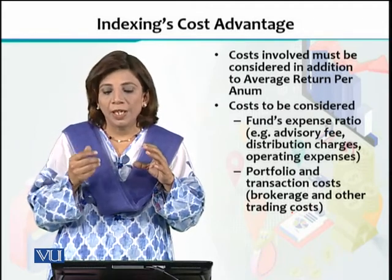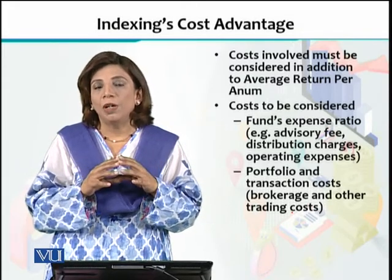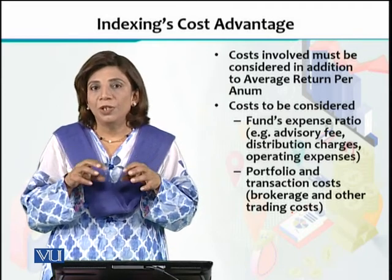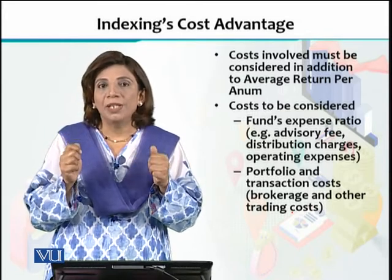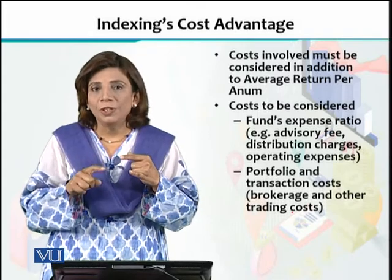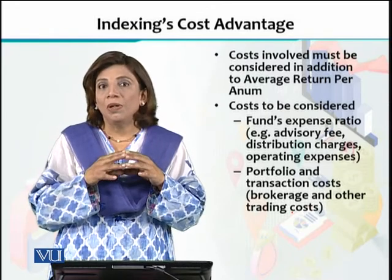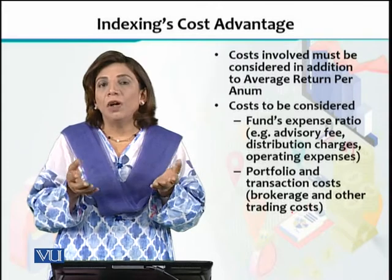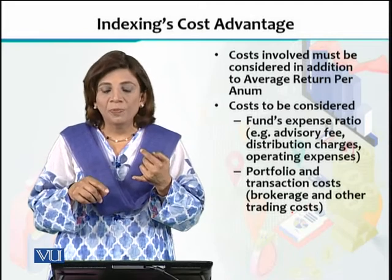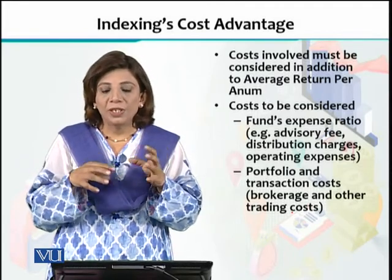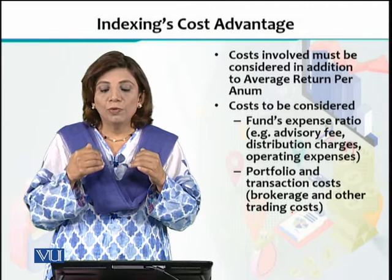We have to consider the cost, and there are two types of costs involved when you are investing in a financial instrument — whether that is a stock, mutual fund, or any other financial instrument. It is essential to consider the cost aspect as well. There are two types of costs. The first is the fund's expense ratio, which includes advisory fees, distribution charges, and operating expenses. The second type of costs are the portfolio and transaction costs.